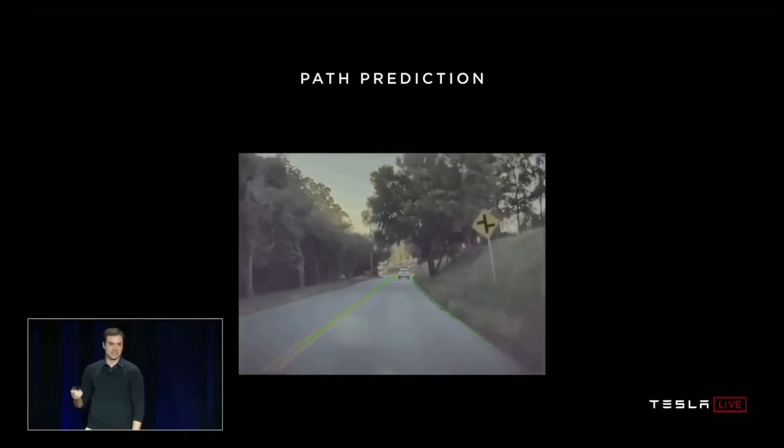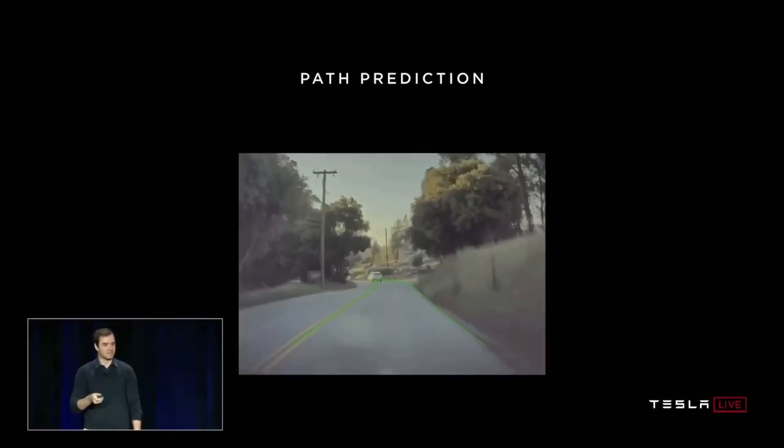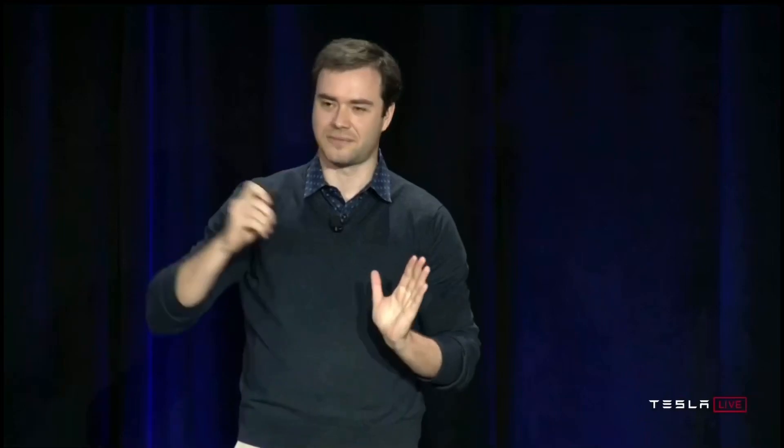Path prediction is actually live in the fleet today. If you're driving cloverleafs — until maybe five months ago your car would not be able to handle a cloverleaf, but now it can. That's path prediction running live on your cars; we shipped this a while ago. And today you are going to get to experience this for traversing intersections. A large component of how we go through intersections in your drives today is all sourced from path prediction from automatic labels.